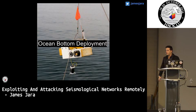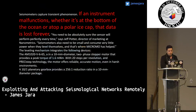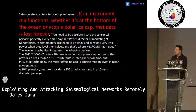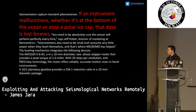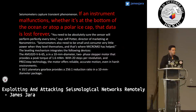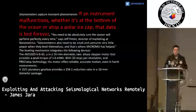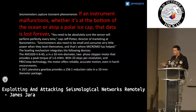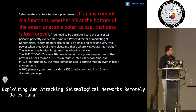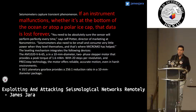We are talking about deployments of one month. Jeff Potter, the marketing leader of Nanometrics, claims that if the instruments malfunction — whether at the bottom of the ocean or atop a polar ice cap — the data will be lost forever. So if they don't work for even one second, they will lose the data forever. There is no other way to recover it.